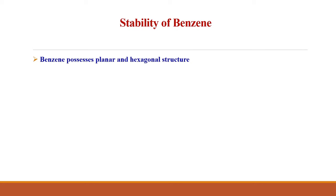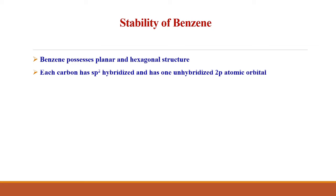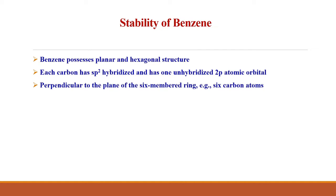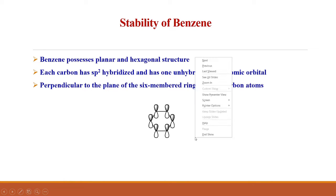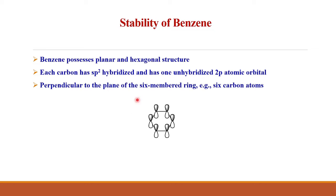Benzene possesses a planar and hexagonal structure. In benzene, there are six carbon atoms. Each carbon is sp2 hybridized and has one unhybridized 2p atomic orbital, which is perpendicular to the plane of the six-membered ring — that is, the six carbon atoms. So, let us consider this is the benzene, which has six 2p atomic orbitals.